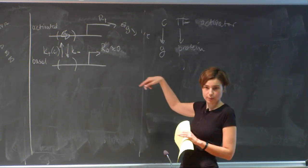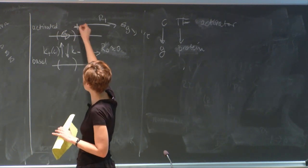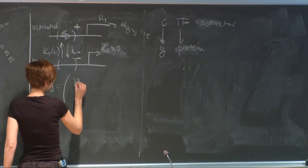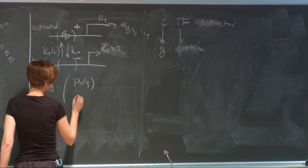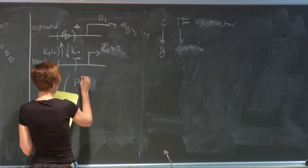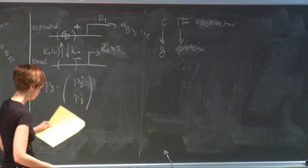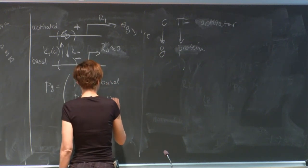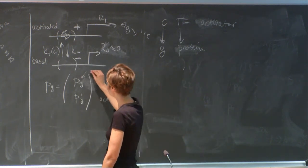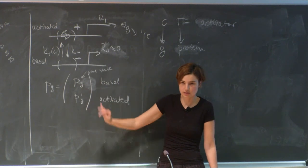It so happens that K+(C) often has a sigmoidal form — the more transcription factor you have, the more binding you get, up to some saturation level. If you plug this in and define an equilibrium constant KD = K−/K+, you get a Hill function: N1 = C^H / (KD^H + C^H). This is like a Fermi function. The concentration at half-maximum expression is the equilibrium constant KD, and the slope of this curve is given by the Hill coefficient H — the steeper it is, the faster you transition between the two states.